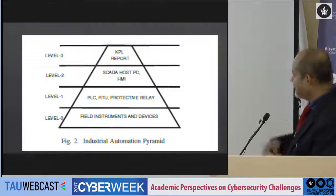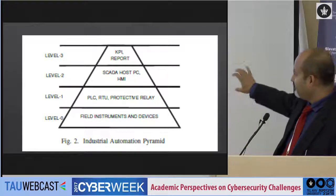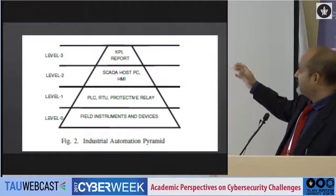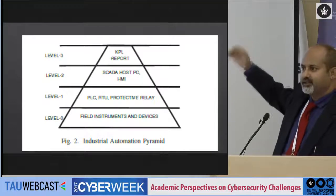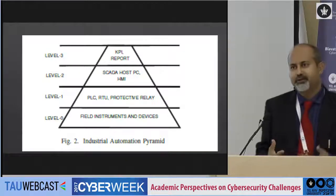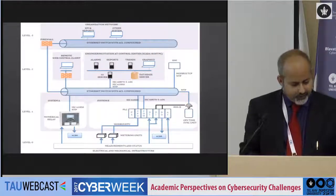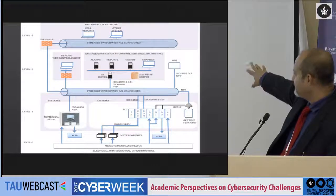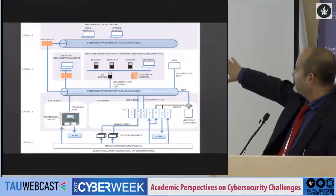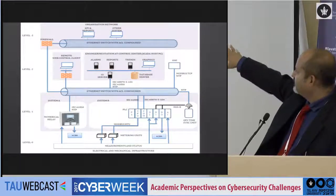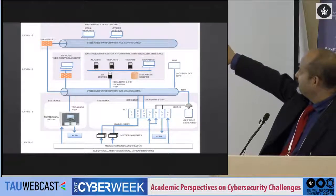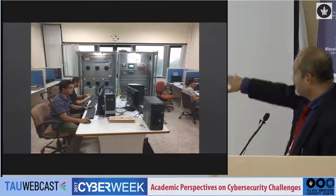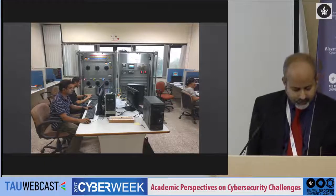The industrial automation pyramid has at the bottom level the field instruments and devices, then programmable logic controllers, RTUs (remote terminal units), relays, and other IEDs. Then you have the SCADA layer — the supervisory control layer — and then a higher layer for business-level reporting. What we have here at level zero is our PLC, various meters, a GPS time-sync unit, and relays. Then we have a switch that puts everything into the LAN environment, and it goes into the engineering workstations where SCADA control and web-based control resides.